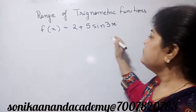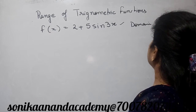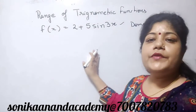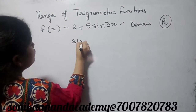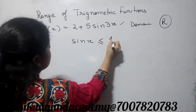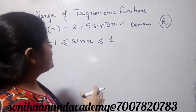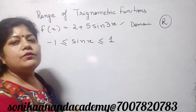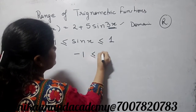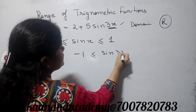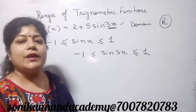Now, for this question, the domain is the real numbers. We have to find the range. As we know, the value of sin x always lies between minus 1 and 1. Here we have sin 3x, and its value always lies between minus 1 and 1.